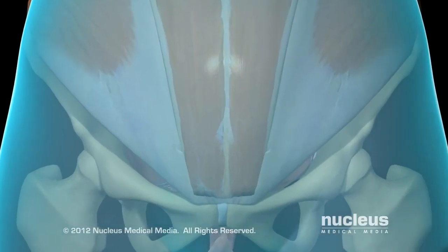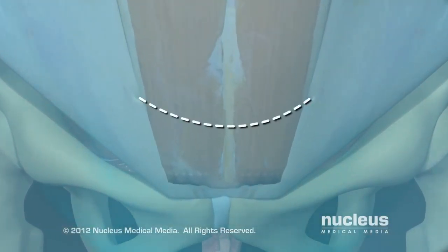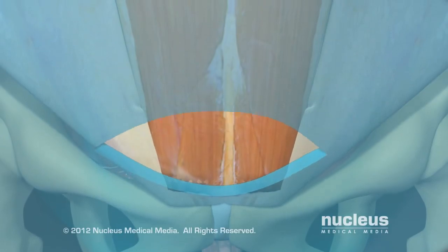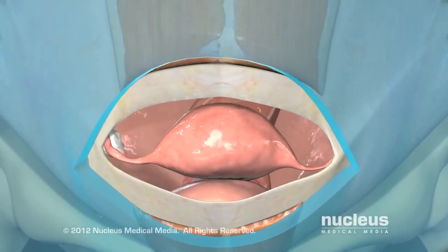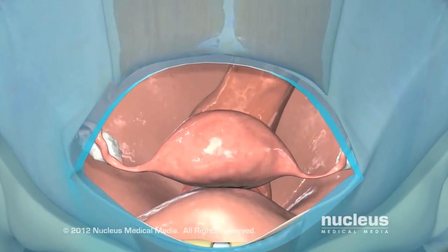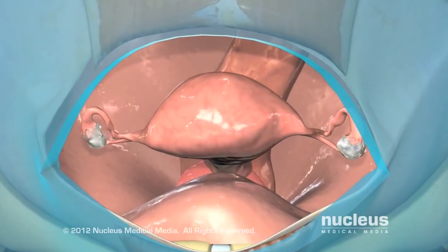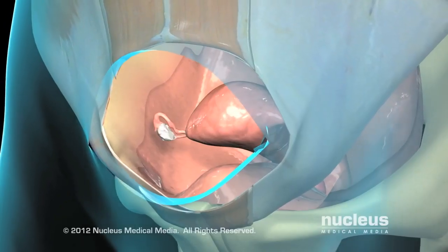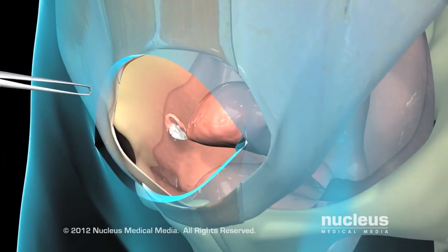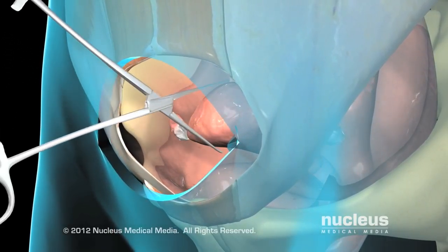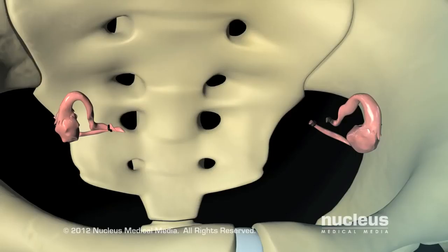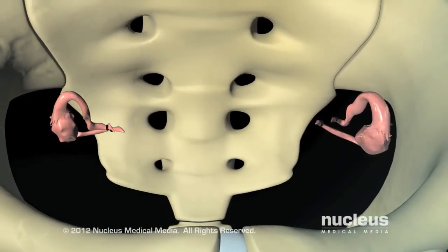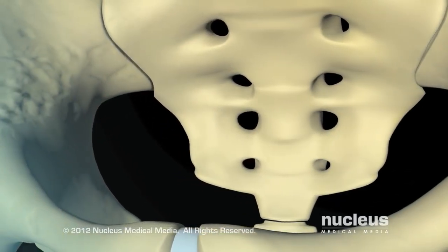For an abdominal hysterectomy, your surgeon will make an incision in your lower abdomen, pull back the muscles to expose the uterus, cut the ligaments and tissues holding the uterus in place, and remove the uterus through the abdominal incision. If your procedure includes a salpingo-oophorectomy, your surgeon will remove the ovaries and fallopian tubes in the same manner.